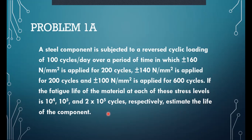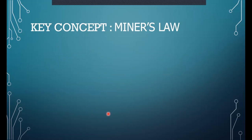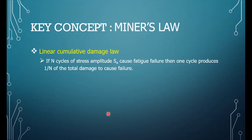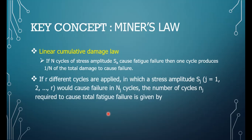We'll brush up very quickly on the concepts learned in our last class. The first thing is Miner's Law, which is a linear cumulative damage law. It says that if a component fails in N cycles of a load S, then applying one cycle will cause 1/N times damage to failure.